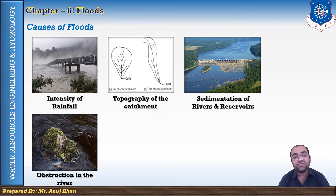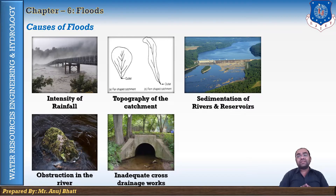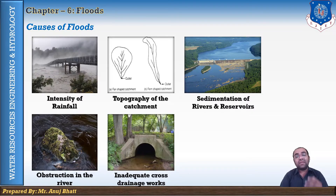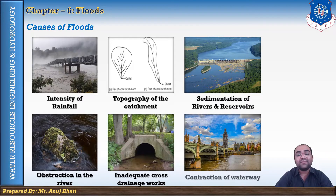The fifth cause is inadequate cross drainage structures. When a cross drainage structure reduces the depth of flow for high flood conditions, it becomes inadequate. In a cross drainage structure such as an aqueduct, the river passes below the canal. The structure constructed for smooth running of river flow may be inadequate for high flood flow, causing the water level to rise on the upstream side and submerge the surrounding area.